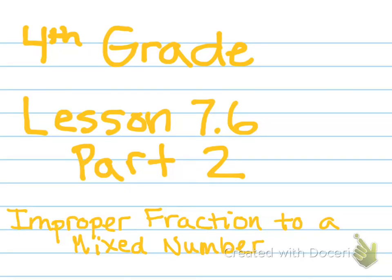All right, fourth graders, we are on lesson 7.6, part 2. We're going to be converting an improper fraction to a mixed number. Part 1 was going from a mixed number to an improper fraction, so we're just doing the opposite. Let's get started.